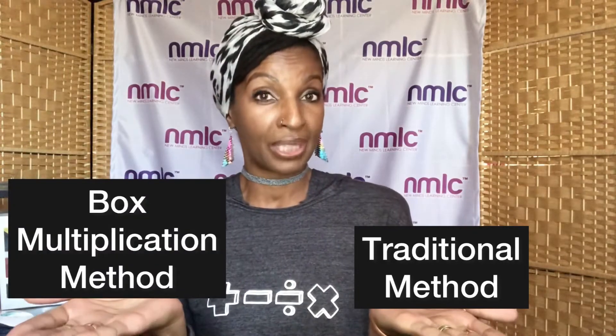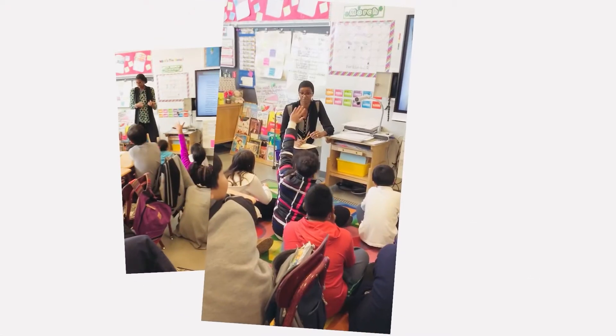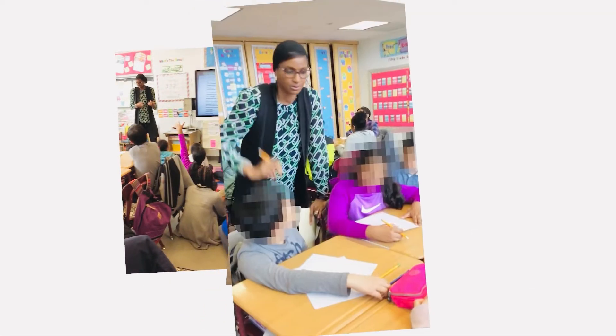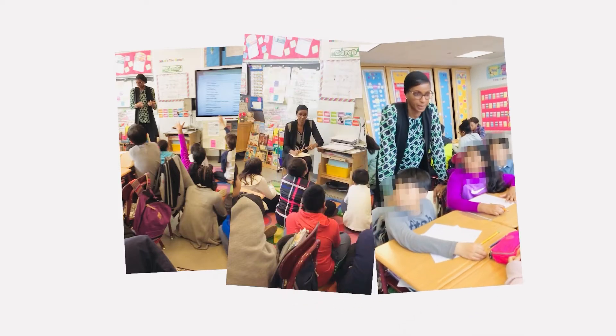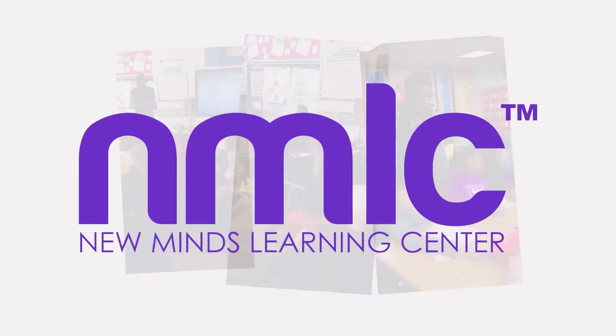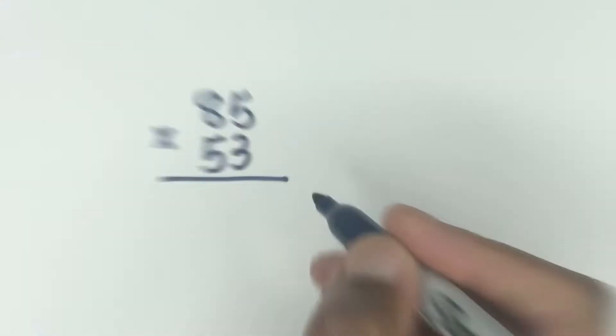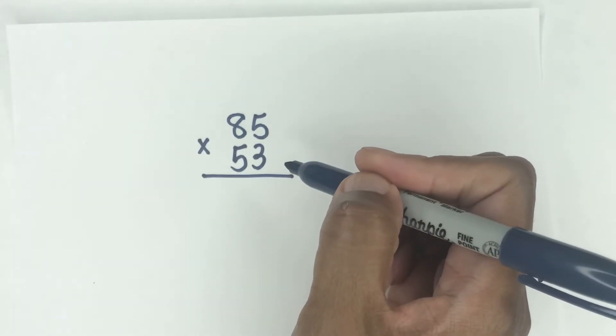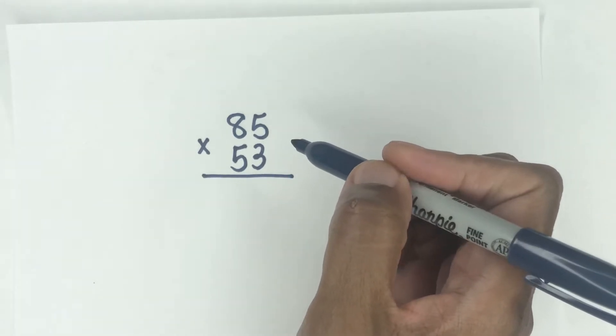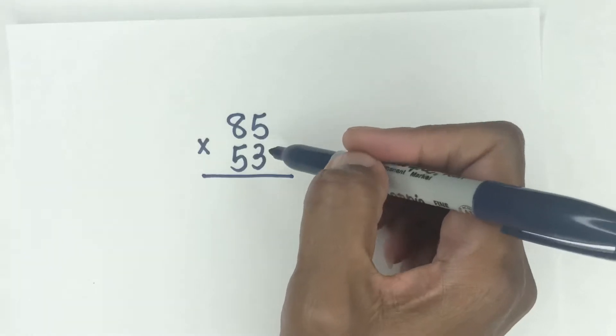The traditional method versus the box multiplication method. Let's get into it right now. So here is a traditional two by two multiplication method. So let's go through this for the sake of the video. I have to go through the steps even though you may or may not know how to do it. Let's go ahead.